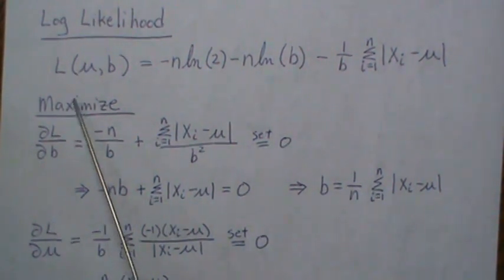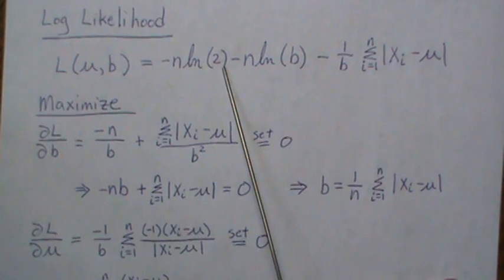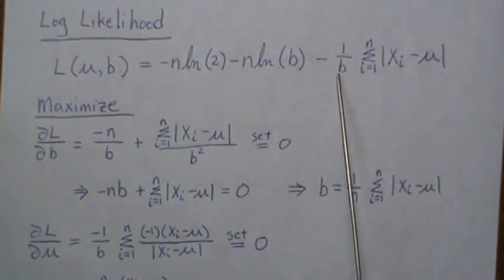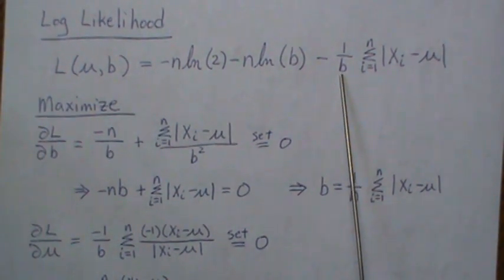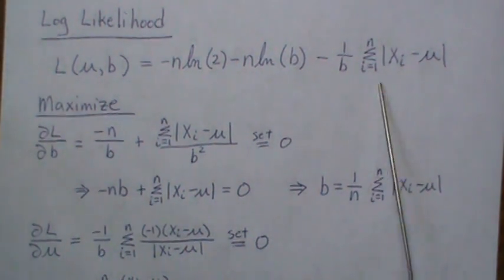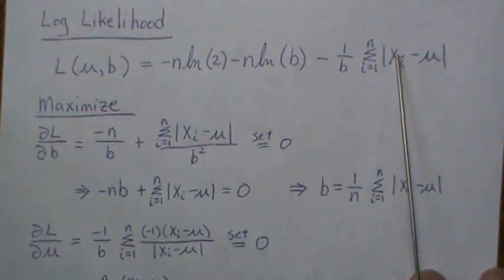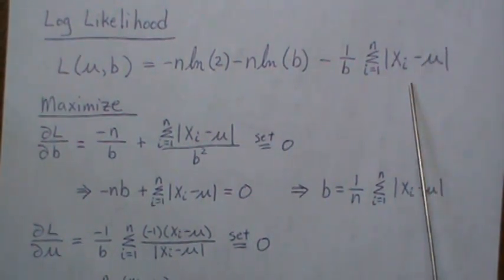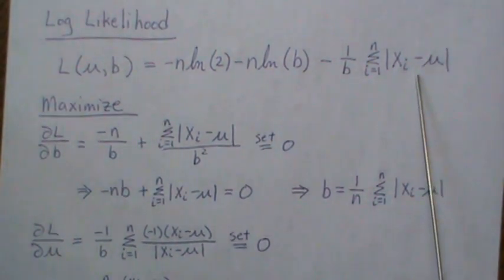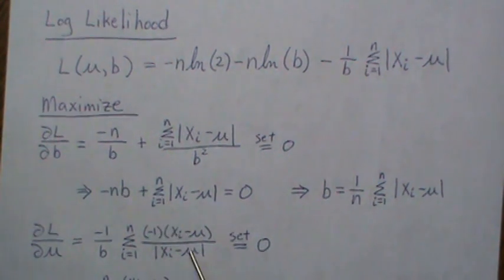So now we take the partial of L, the log likelihood with respect to mu. So this is constant, this is constant, the minus 1 over B is constant, and then we take the derivative as the linear operator, so we can take it in here, and then the derivative of this absolute value ends up being this right here.